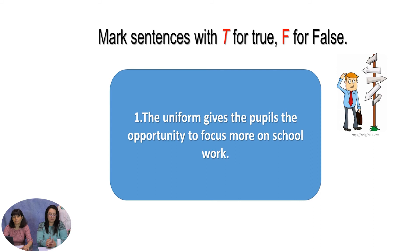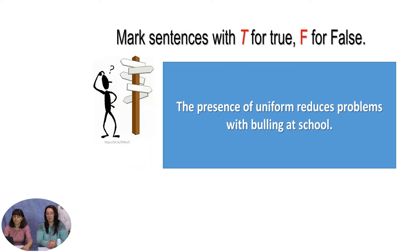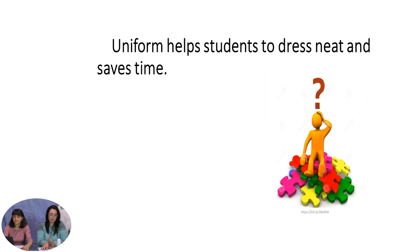Let's check your comprehension with a true and false assignment. You can pause and work at your own pace. The uniform gives pupils the opportunity to focus more on school work — true. It is cheaper for parents or students to buy school clothes — false. The presence of uniform reduces problems with bullying at school — true. Uniforms can improve academic results — true. A uniform helps students dress neatly and saves time — true.